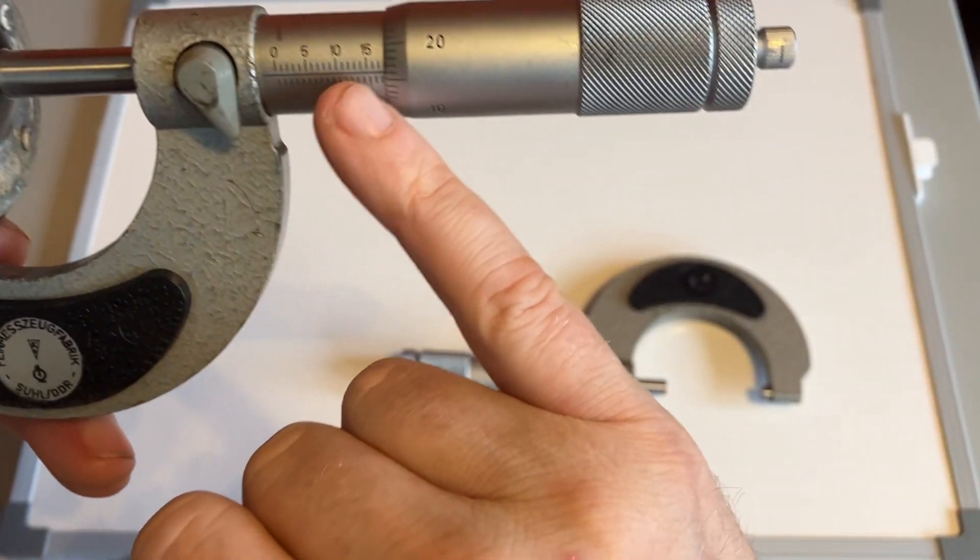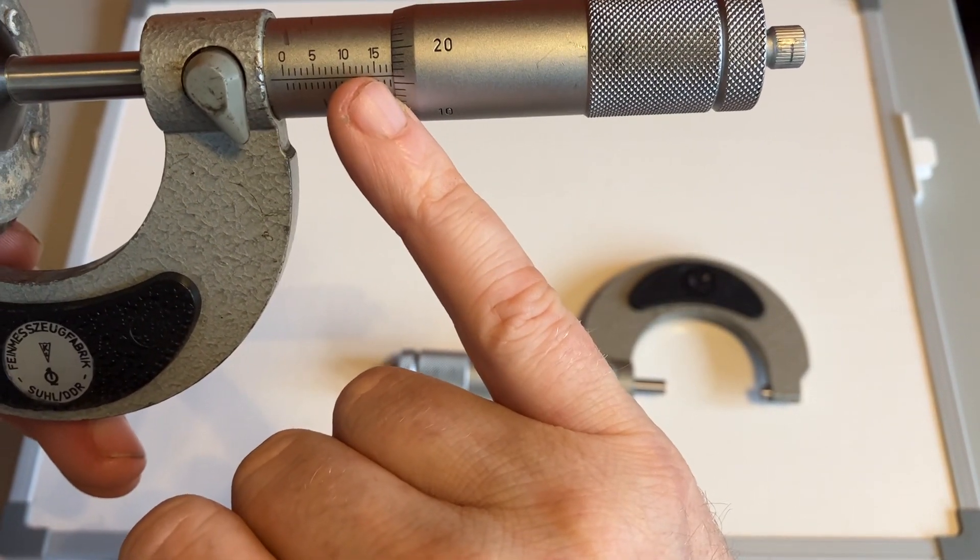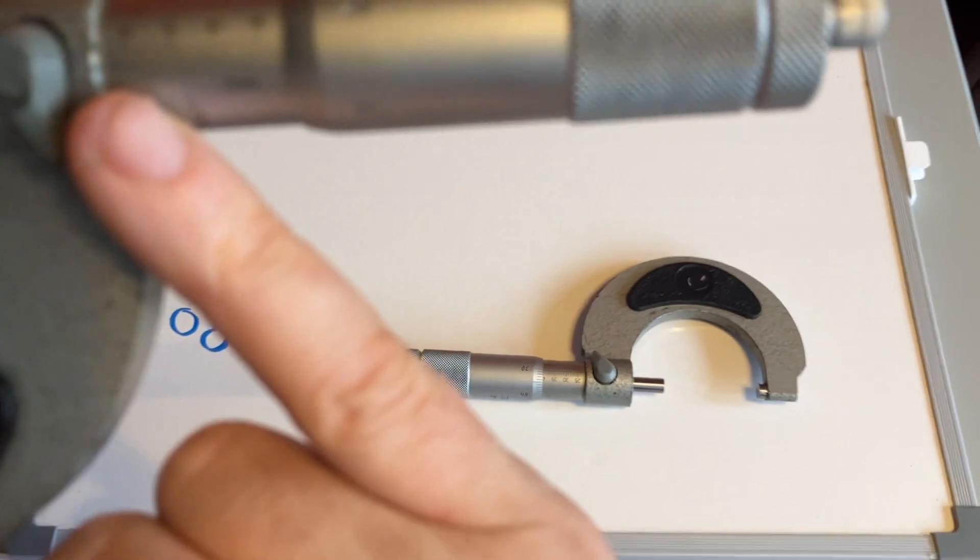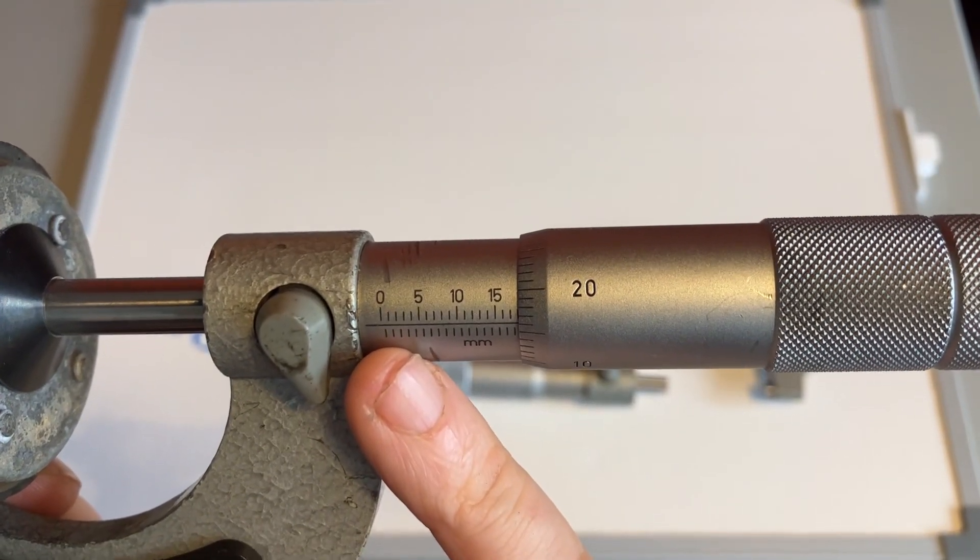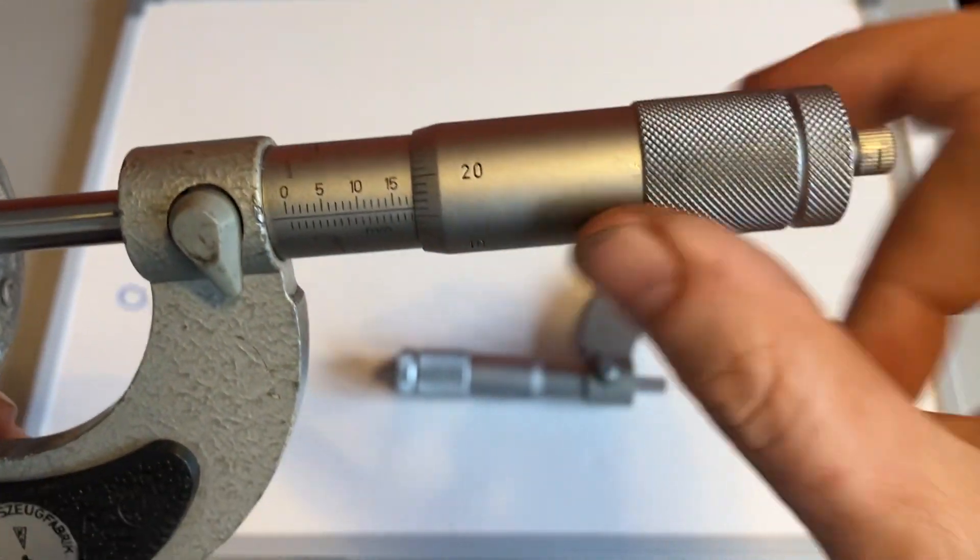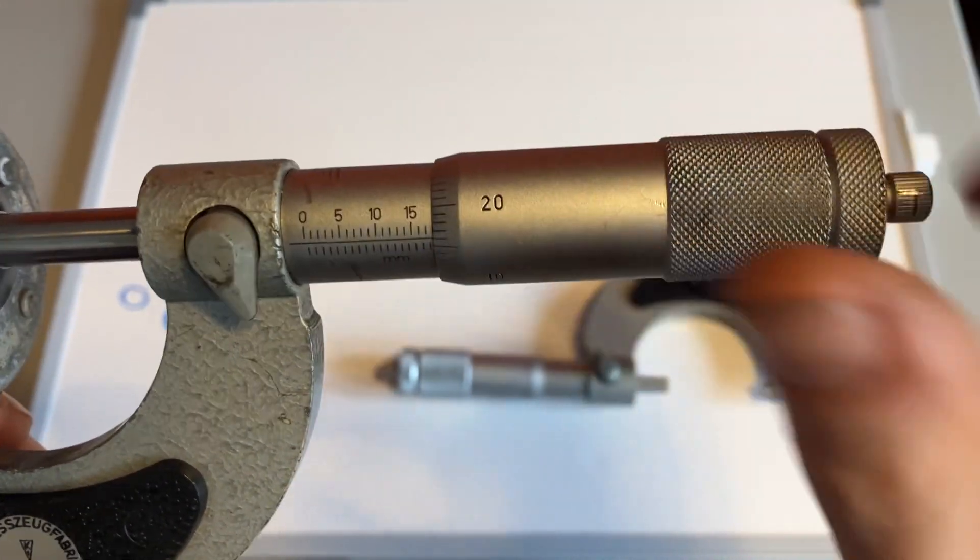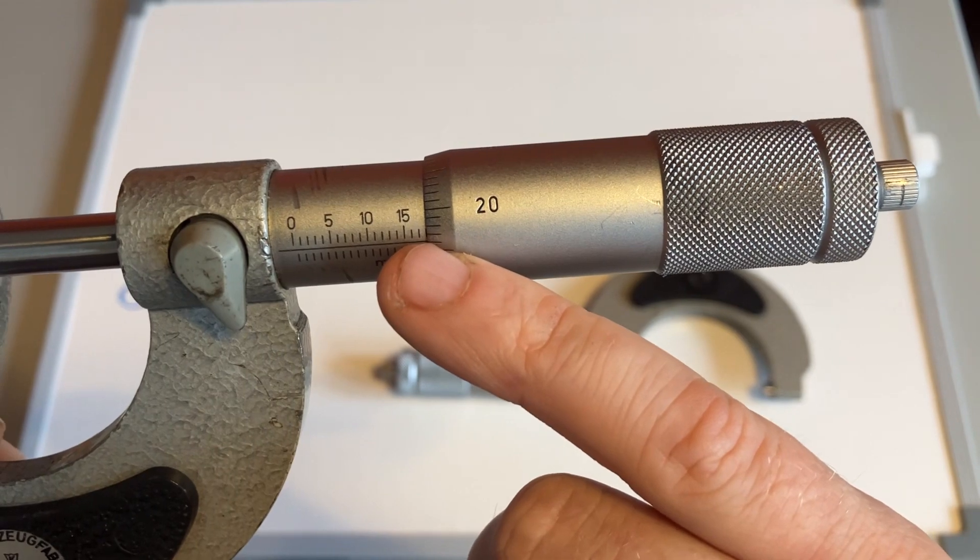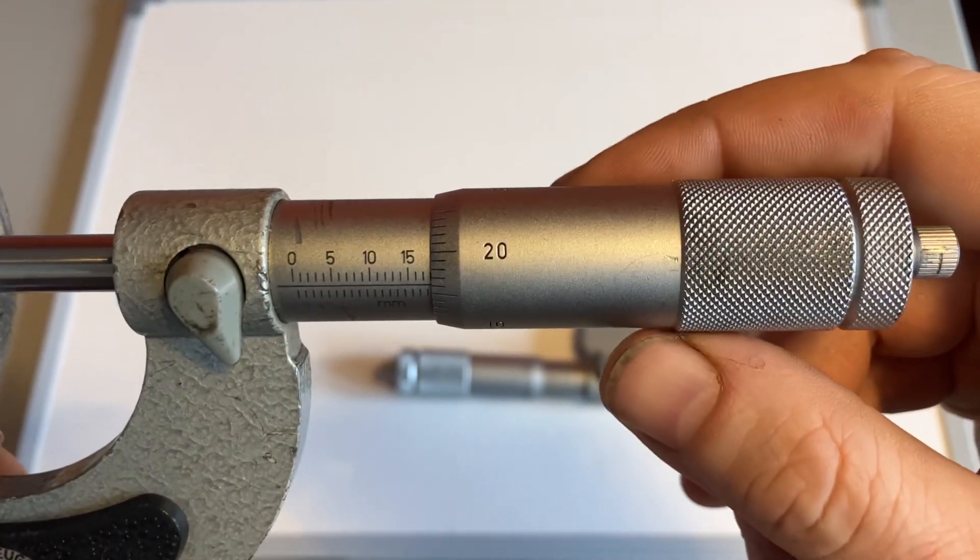So when you're measuring, you've got your whole millimeters, which are self-explanatory, and then the 0.5s there. So if your 0.5 is visible after the whole number, then this will represent 51 to 99. If the whole number is the last thing you see, then this will represent 0 to 49.